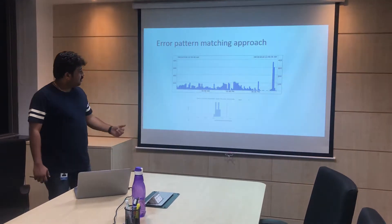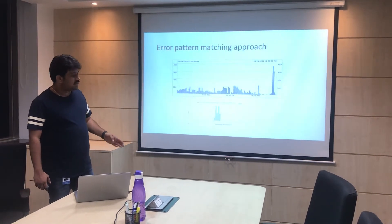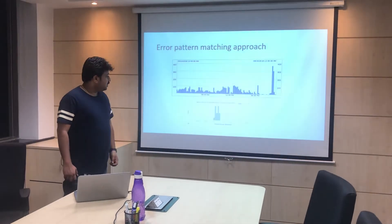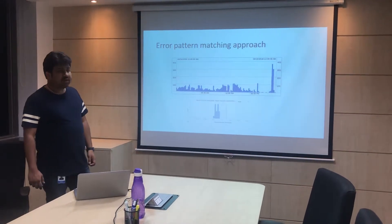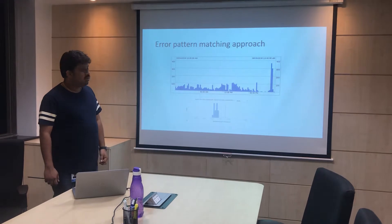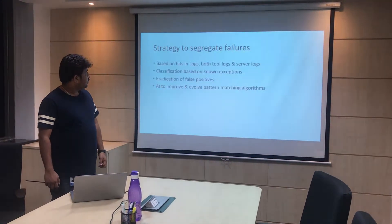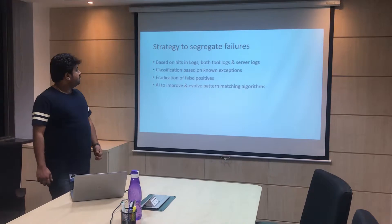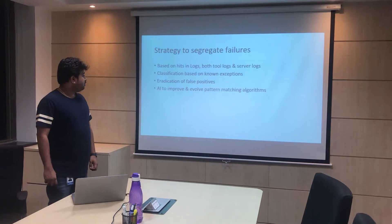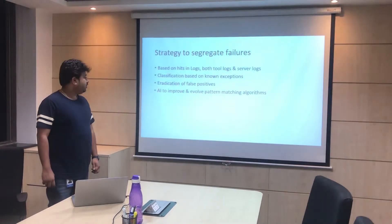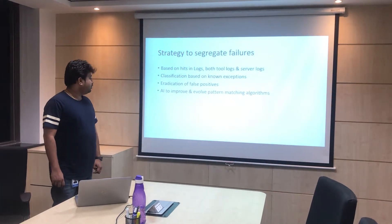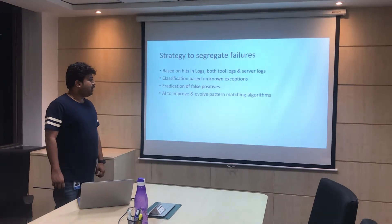This is the error pattern matching approach — it is a time-sliced approach. Whenever there is a hit on the server log and automation log, there will be an index popped up on the maps. We will have the matching indexes from both the maps and convert that into a functional issue. We segregate failures based on hits in both tool logs and application logs, classification based on known exceptions and functional issue exceptions. We are also working to eradicate false positives and using artificial intelligence to improve and evolve pattern matching algorithms.